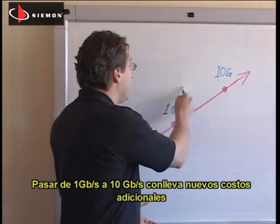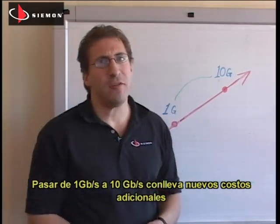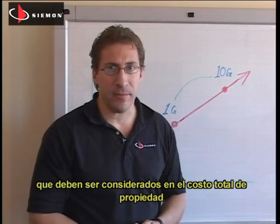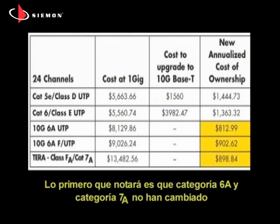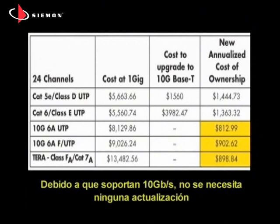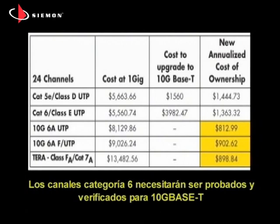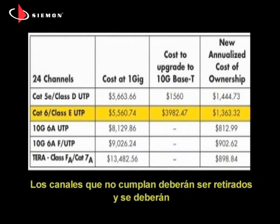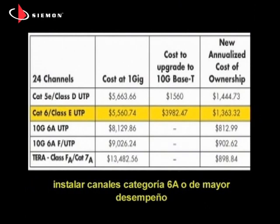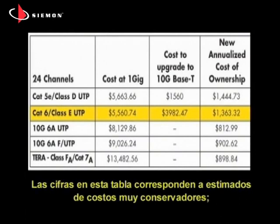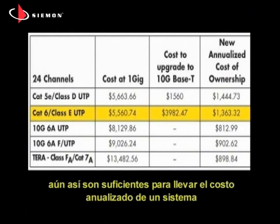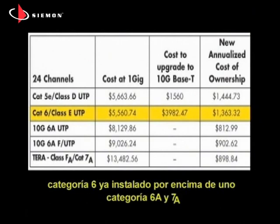Moving from 1 gig to 10 gig introduces many new incremental costs that need to be factored into your total cost of ownership. The first thing you'll notice is that the Category 6A and Category 7A systems have not changed. Because they are 10 gig capable, no upgrades are necessary. Moving Category 6 to 10 gig, however, will add costs. Legacy Category 6 channels will need to be tested and verified for 10G Base-T. Non-performing channels will have to be removed and Category 6A or higher channels will have to be installed. The figures in this table are very conservative cost estimates for these steps, yet are still enough to drive the annualized cost of a Category 6 legacy system well beyond Category 6A and 7A.